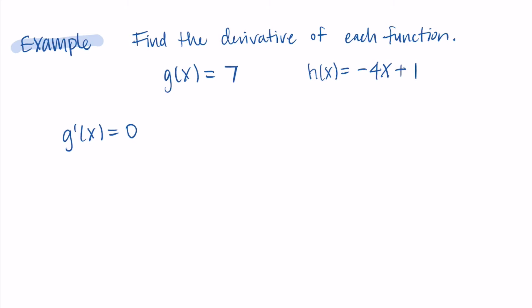To review, g prime of x equals zero means that the slope of g at every point is zero. Then for h prime of x equals negative four, this means the slope at every point on h is negative four.